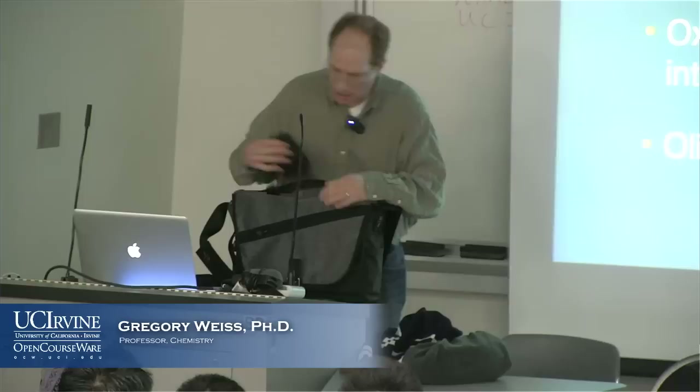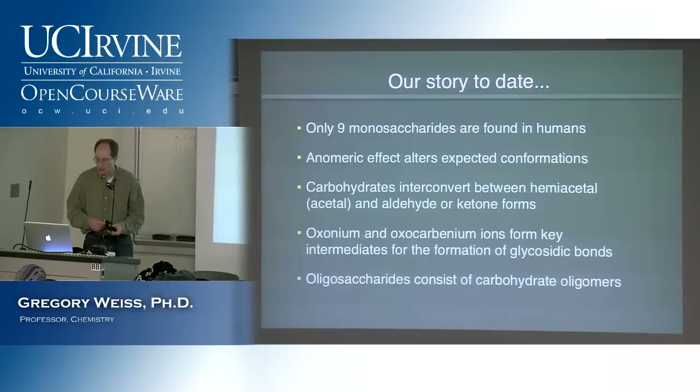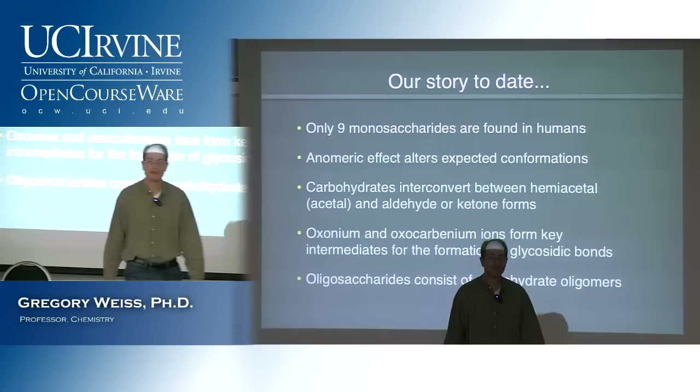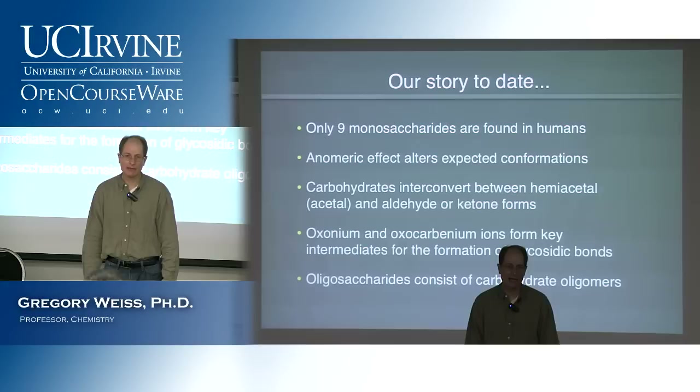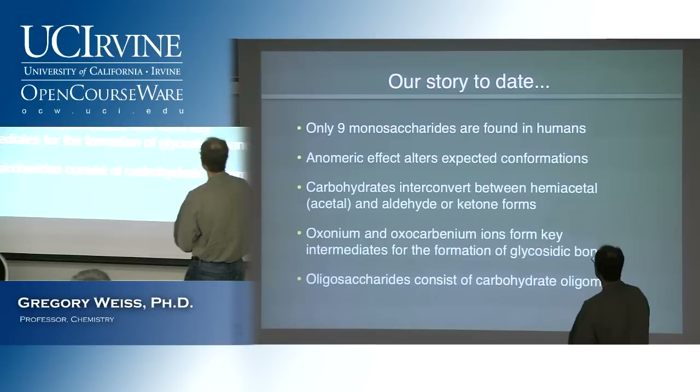Very briefly, let me review what we saw last time before we go on to some new stuff. Last time we were seeing that in the human body, there are really only nine monosaccharides that are found and used in carbohydrate chemistry. This is astonishing because there really could be an infinite number of ways of arraying carbons that are hydrated—hydrates of carbon—which is the chemical definition of carbohydrates. But there are only nine of these that are found.